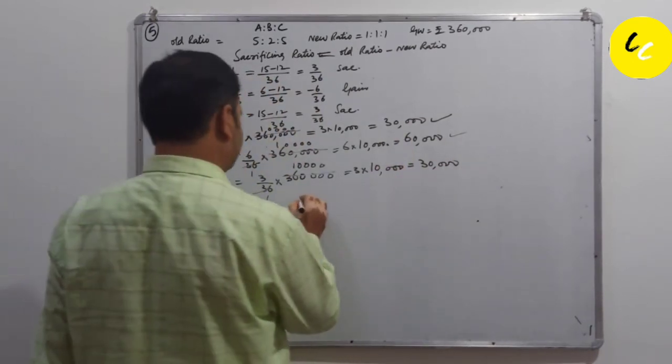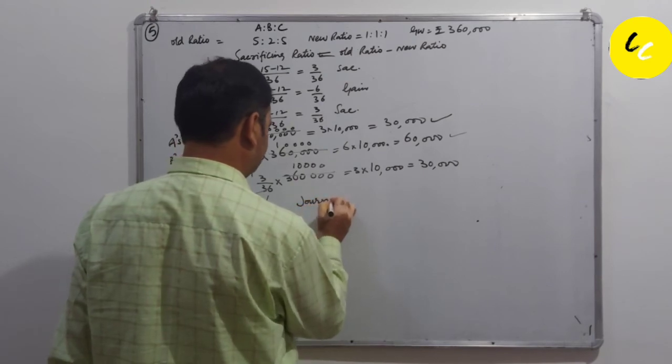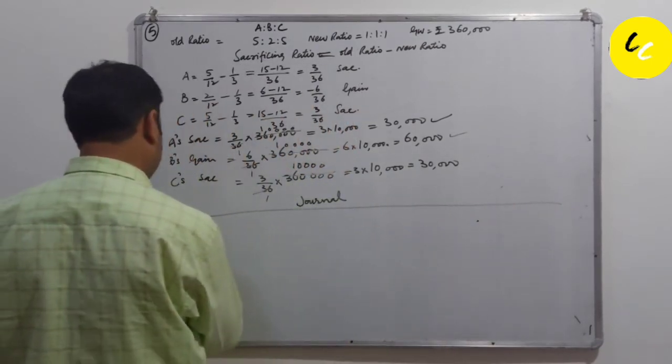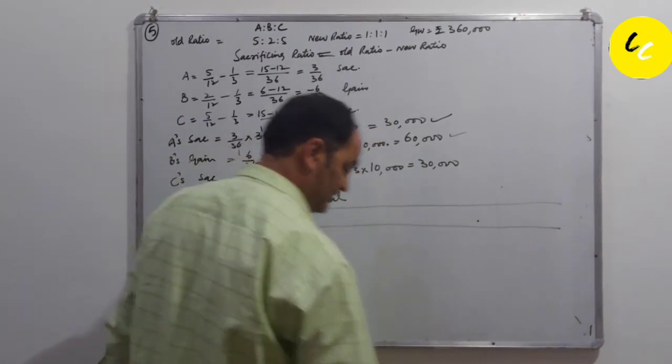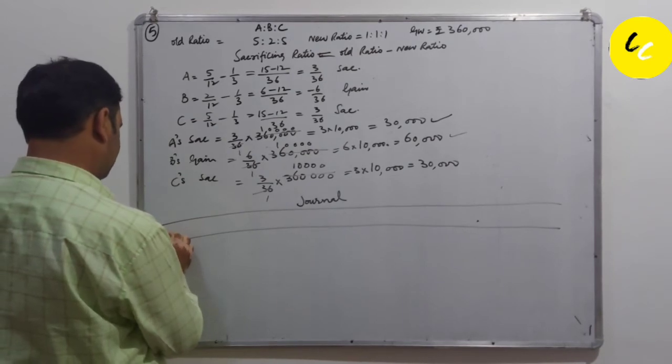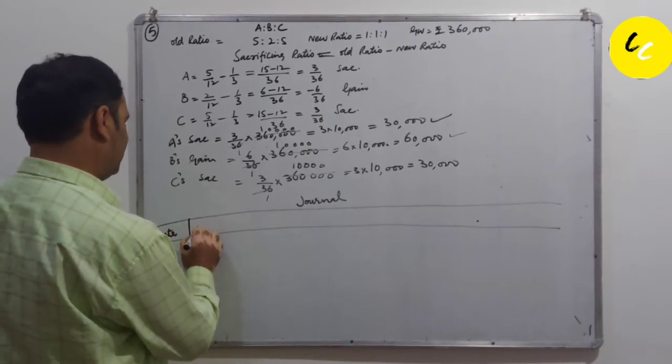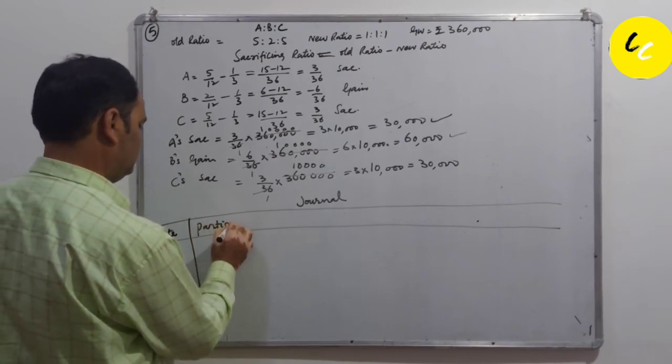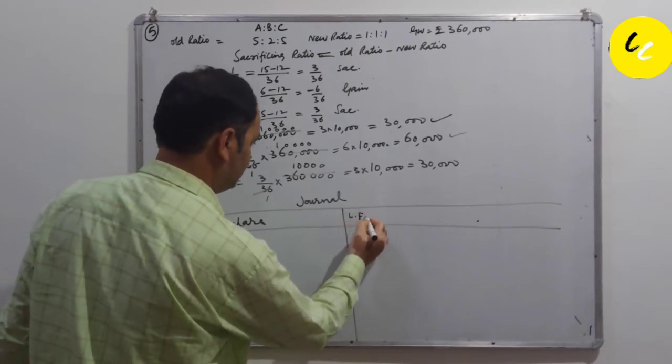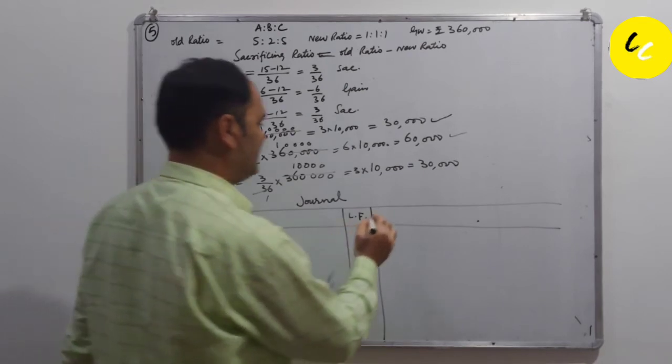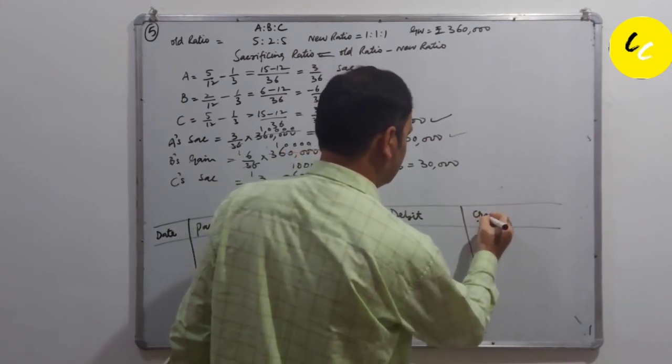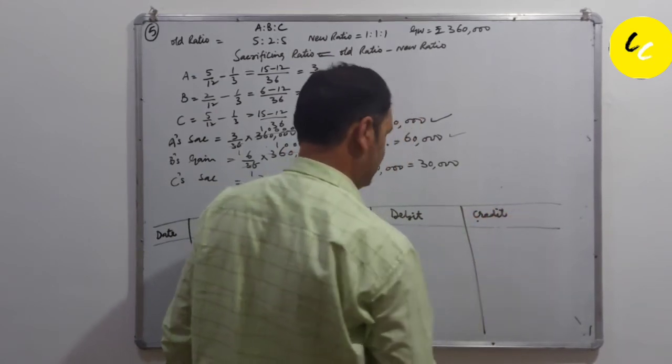Now let us make the journal entry. Let's go through the format of journal. First column is date, then particulars, then LF ledger folio, then debit and credit. These are the five columns of journal.